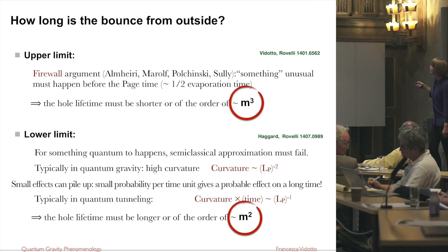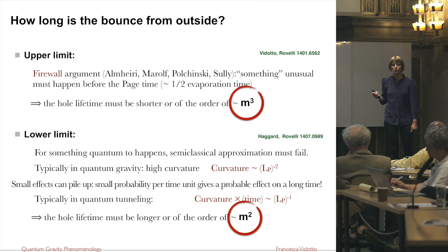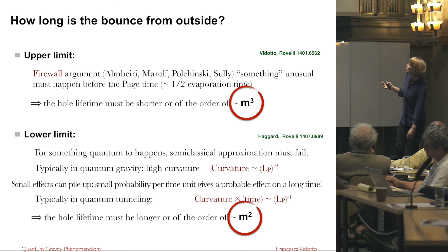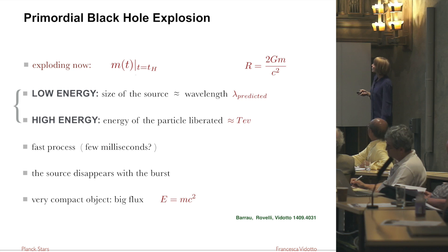So between m³ and m² there is a huge difference. What I will show you is a study of everything that can happen between these two values — we have analyzed the phenomenology associated with all possible explosion lifetimes between m² and m³.